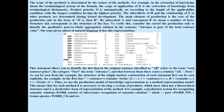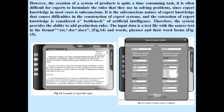The main element of production is the core of the production rule in the form: if A then B. However, the creation of a system of production rules is quite a time-consuming task. It is often difficult for experts to formulate the rules they use in solving the problem. Since expert knowledge in most cases is subconscious, the subconscious nature of expert knowledge causes difficulties in the construction of the expert system, and the extraction of expert knowledge is considered a bottleneck of artificial intelligence. Therefore, the system provides the ability to add production rules.